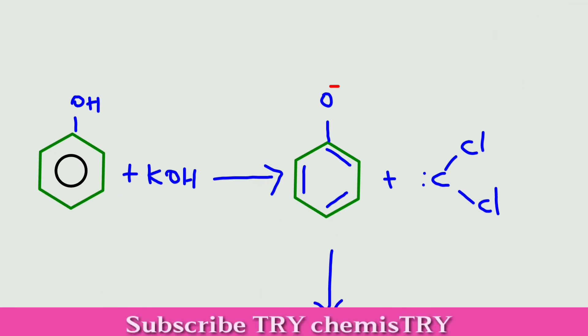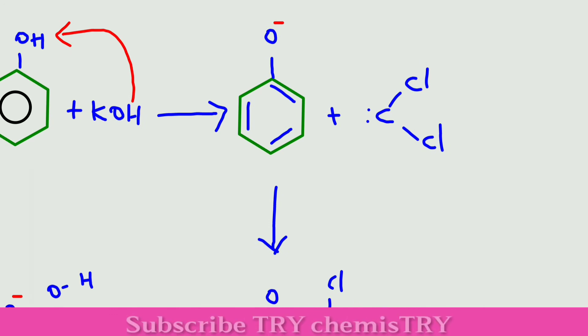In the next step, phenol reacts with potassium hydroxide. After removal of water molecule, we can get phenolate ion. This phenolate ion further reacts with this carbon dichloride.